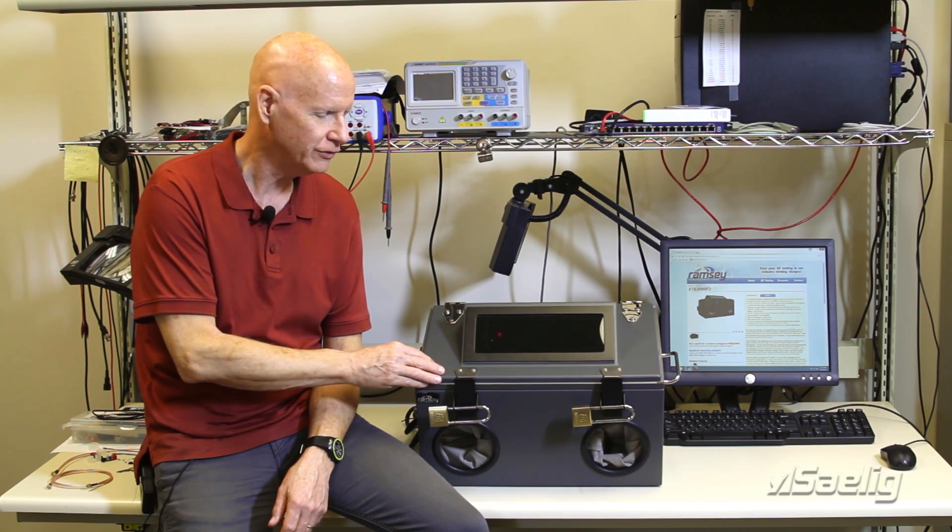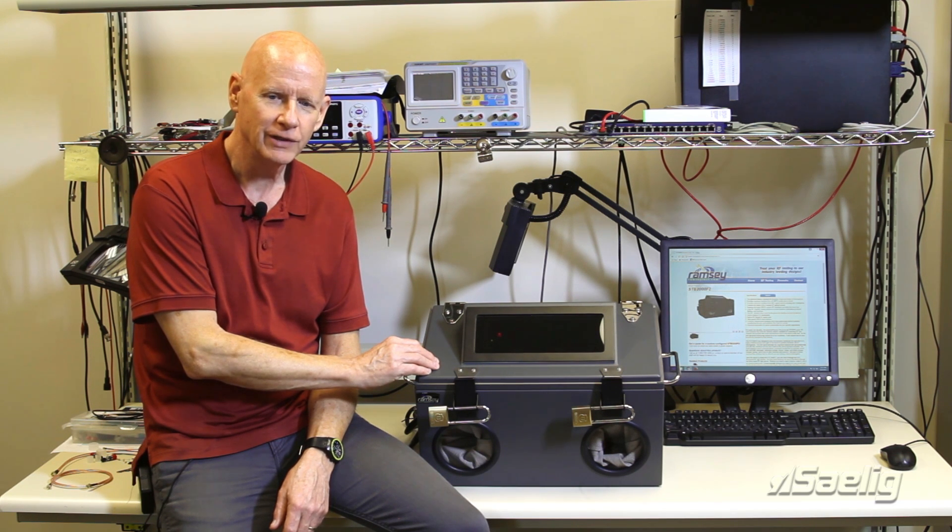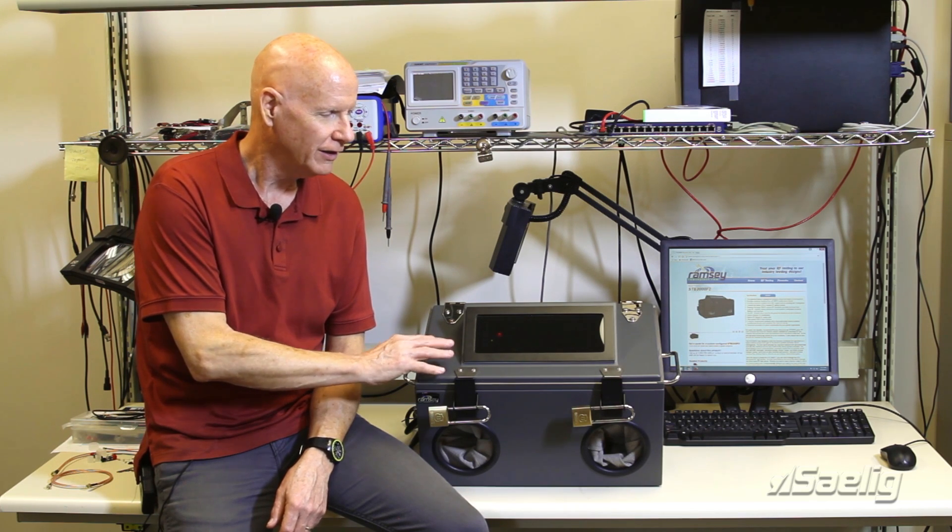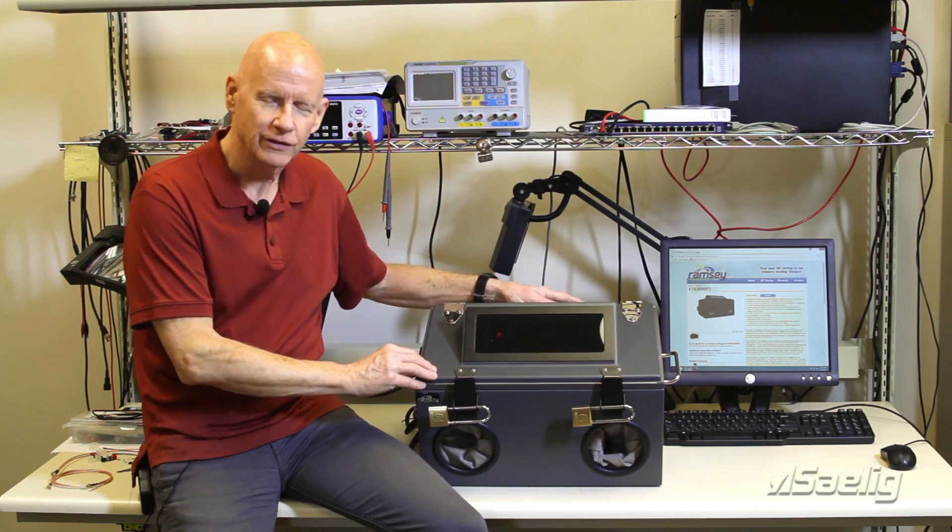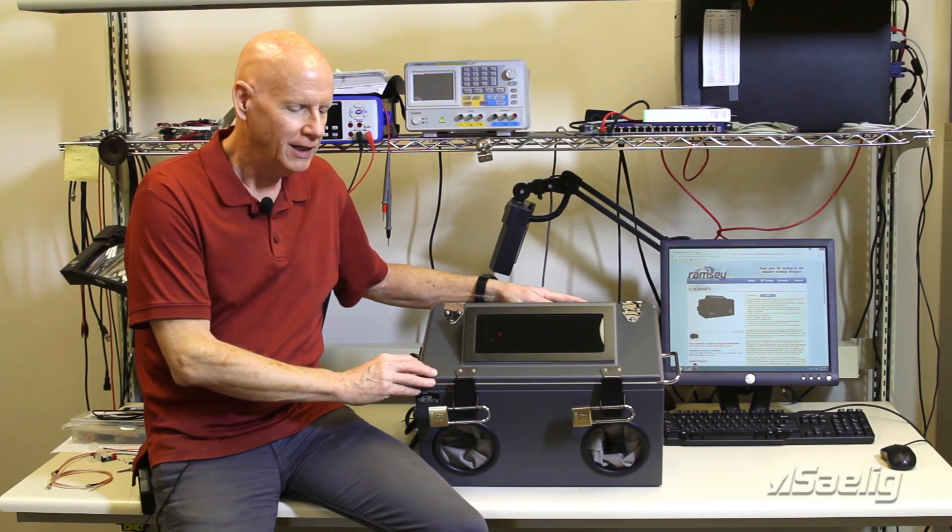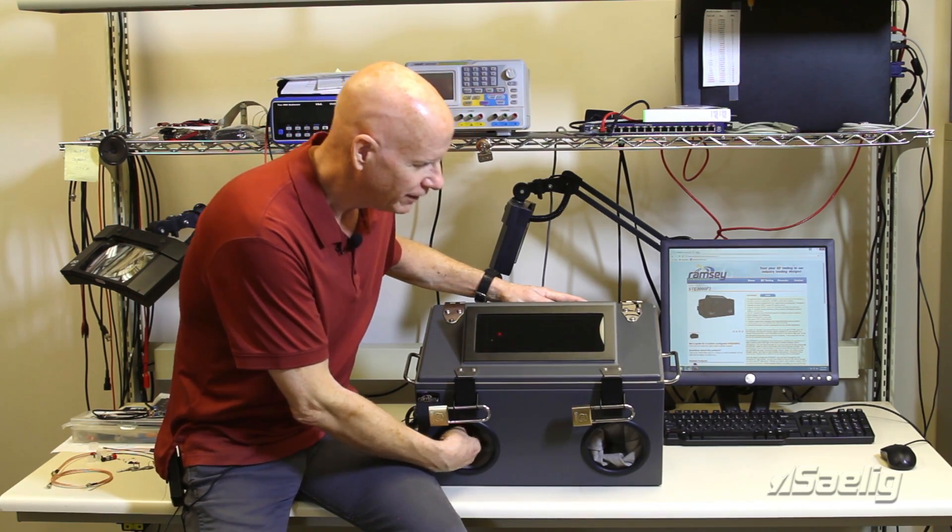Selig and Ramsey have been partners in business for a long time selling these boxes and one of their first products was the STE-3000B.